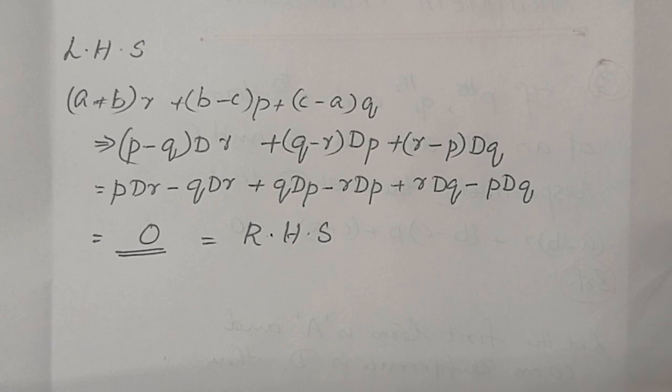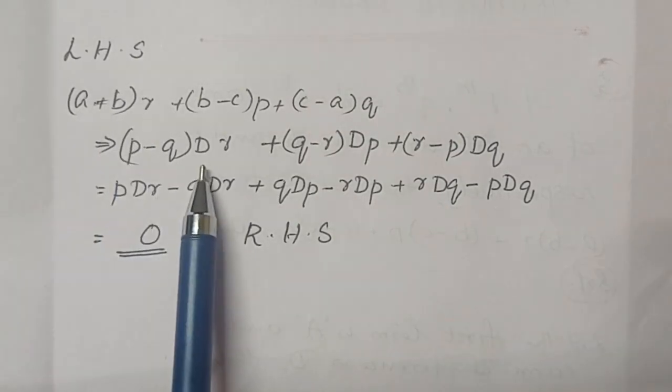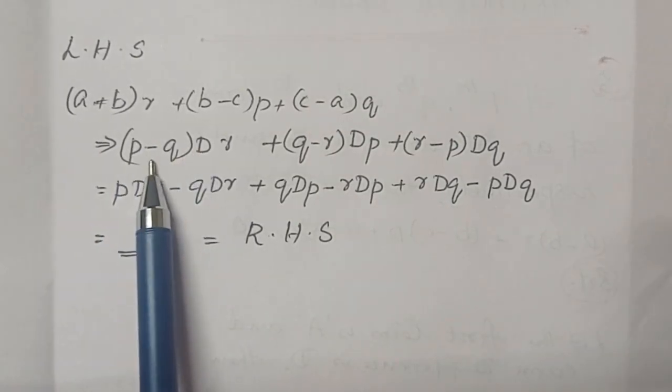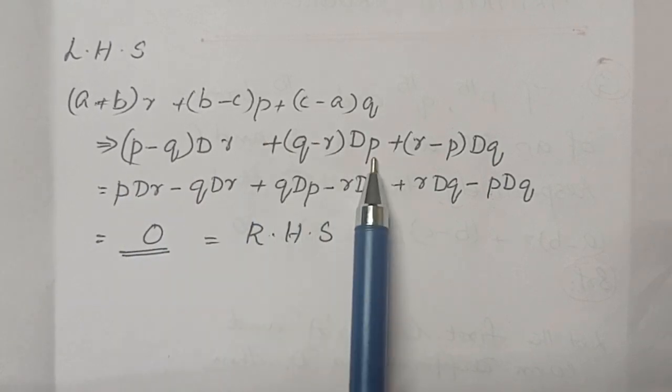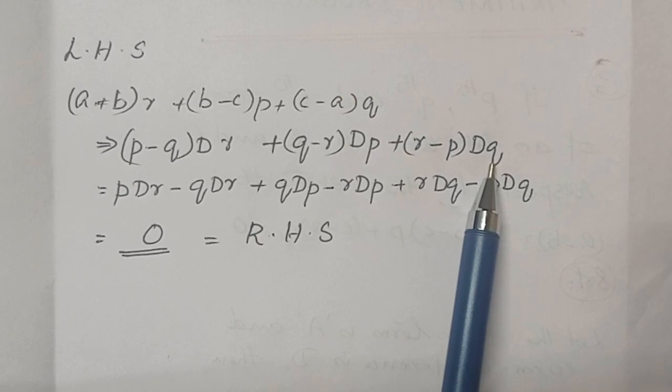The left hand side is (A minus B) into R plus (B minus C) into P plus (C minus A) into Q. Substituting the each values for A minus B, which is P minus Q into D multiplying by R. Here also multiplying by P and multiplying by Q.